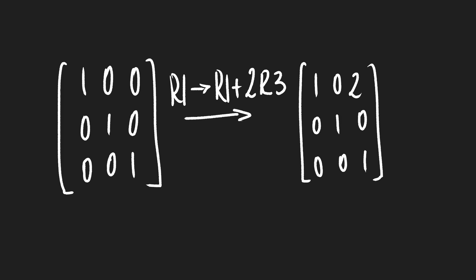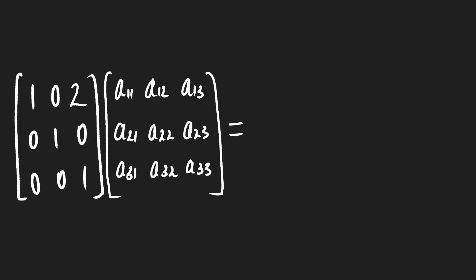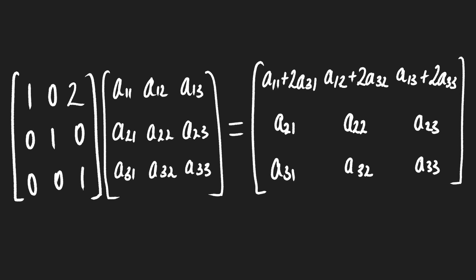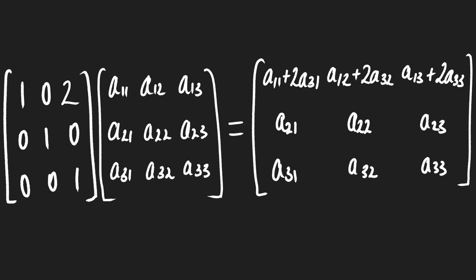The final elementary row operation is adding a scaled version of a row to another. Instead of adding just row three to row one, say we add twice row three — so row one gets replaced by row one plus two times row three, leaving us with 1, 0, 2 on that first row. What happens is it again picks out the first row and third row, but this time multiplies each element of the third row by two before adding it to row one to create the new row one.